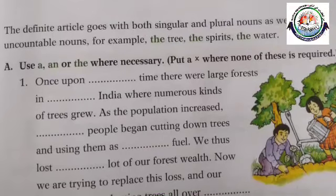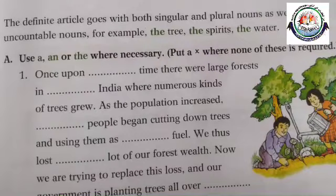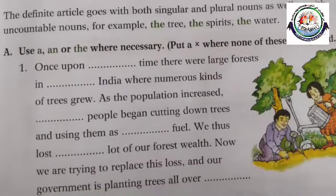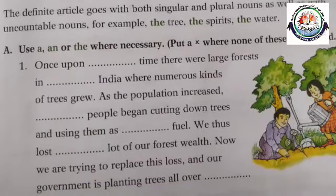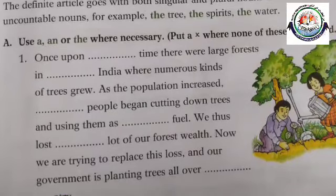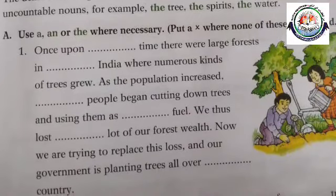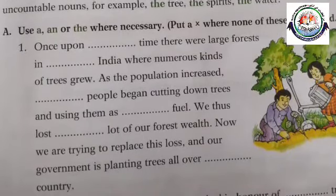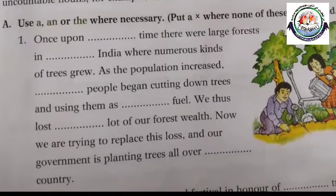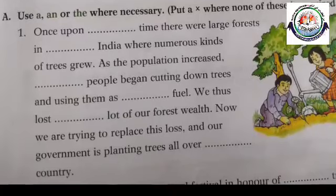I am going to read the complete paragraph now with the filled blanks. Once upon a time — you have to write 'a' there — there were large forests in India. There is no article used there, you have to put an tick mark there, where numerous kinds of trees grew. As the population increased,